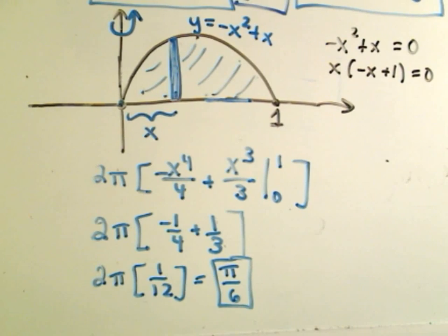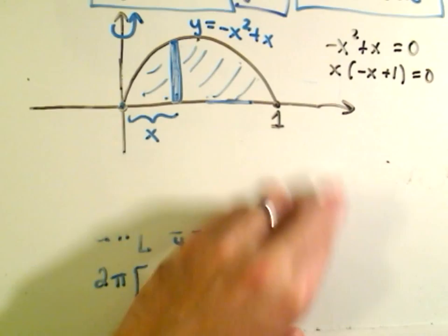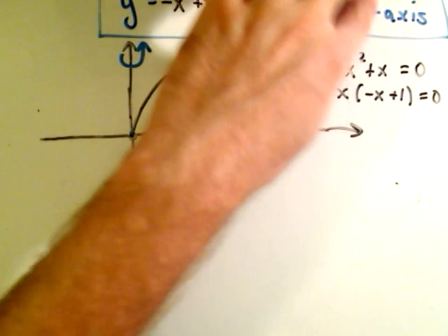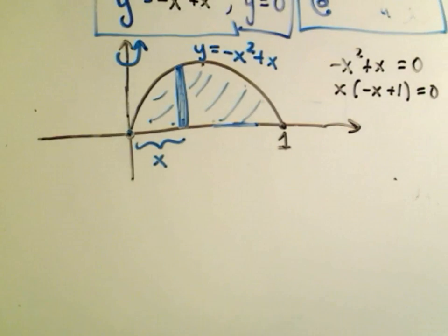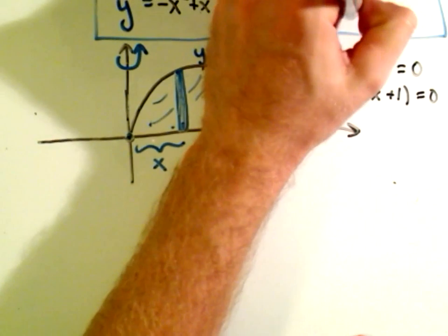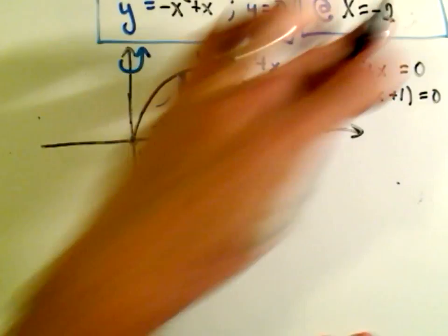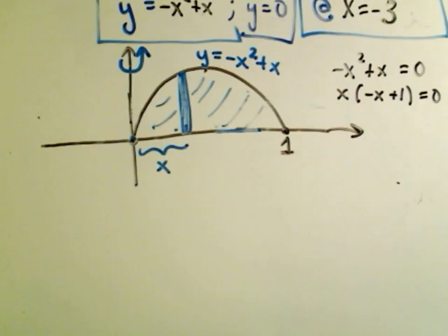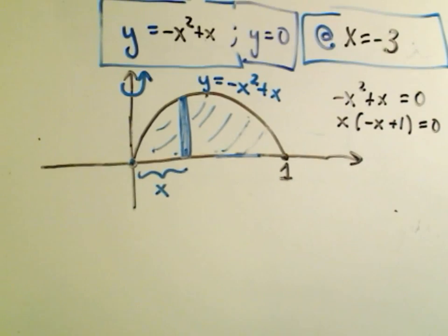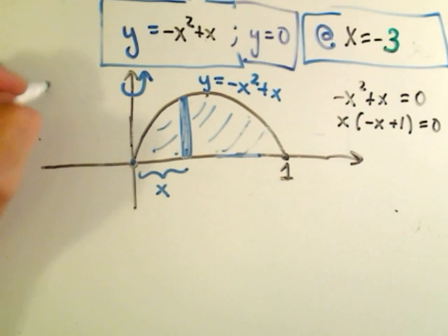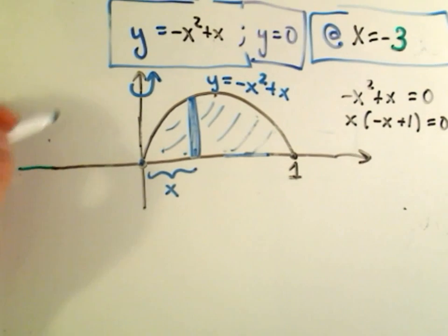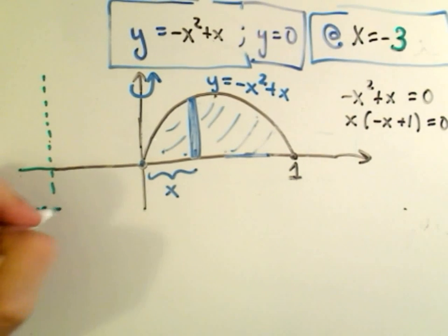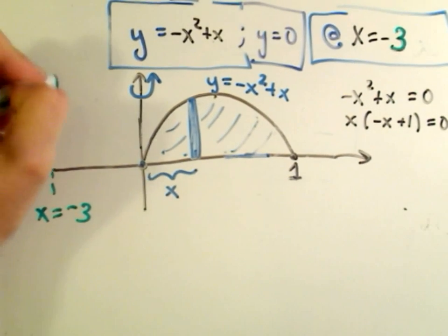Just one little thing, maybe a slight variation on this problem. Suppose we wanted to, instead of going about the y-axis, suppose we wanted to go about the line x equals negative 3. The same region, but now about the line x equals negative 3. So not to scale here, but just so I can squeeze it in. Suppose this is the line x equals negative 3, and now we're rotating about that.